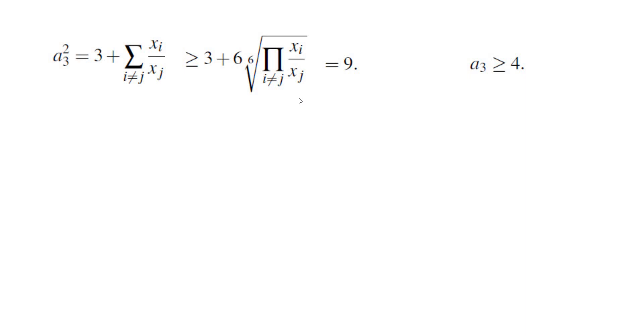But we can't have xi over xj and xj over xi to be the same because xi and xj are not the same which means a3 is at least 4.